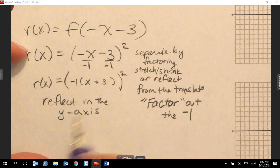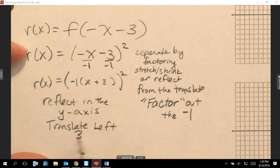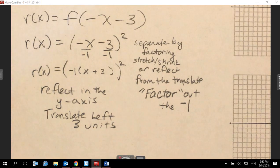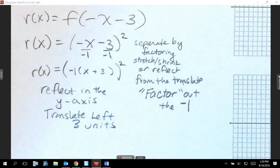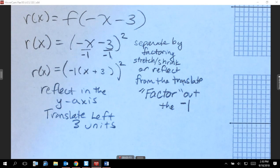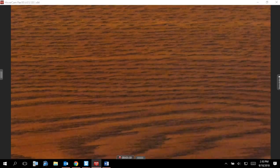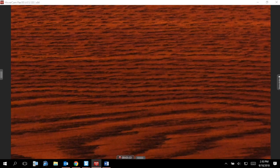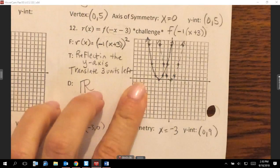So then when I write my transformations, this is a reflect in the Y-axis, which you should have had anyway. But then when you look here, it's a plus three. That translates left three units. So this would only happen if we had a stretch, shrink, or reflection in the Y-axis and a translate left or right. If you have both of those, you have to separate them by factoring. So if that happens again, I'll be sure that I go over this again. That's why that one ended up being to be a left over there.